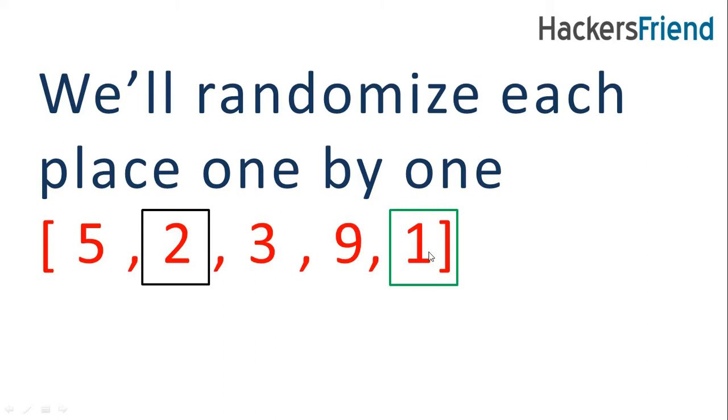Here we are starting from one and we randomly selected two as our element to swap this value. The idea here is we will start randomizing each place one by one. In starting we selected the element given at n minus one position, then we will swap it with any element from the array, then we will do the same with other elements.